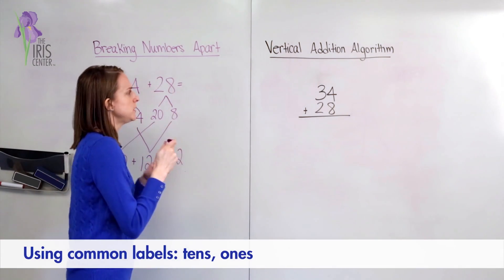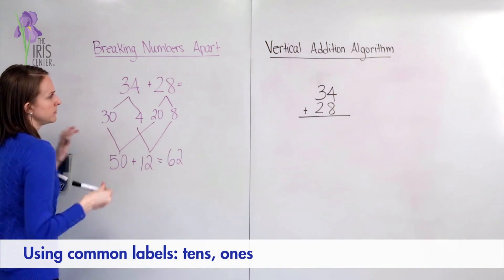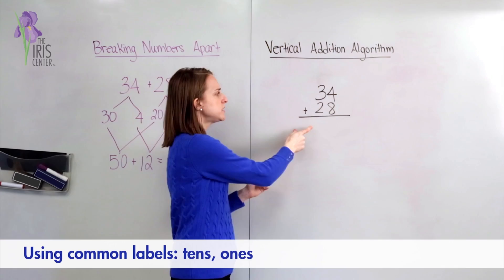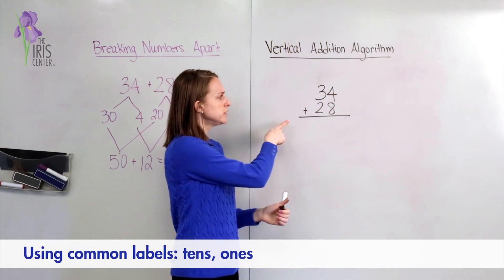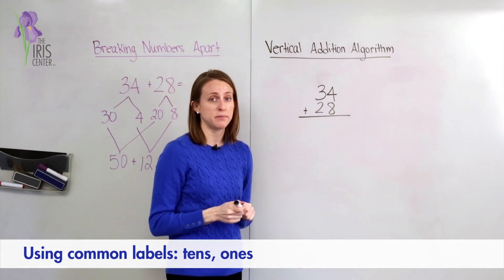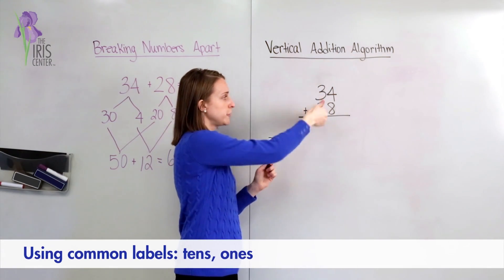Next, what I'm going to show you is the vertical addition algorithm. So a different strategy, but we're still adding the same numbers, 34 plus 28. And if you notice over here, I've stacked the numbers on top of each other so they're in vertical columns.